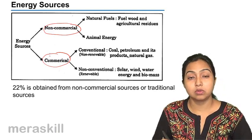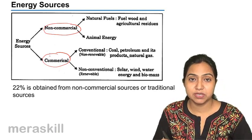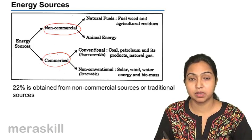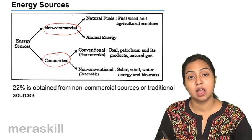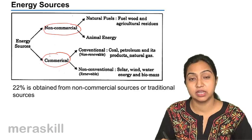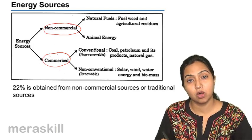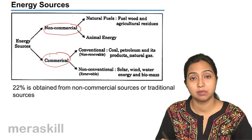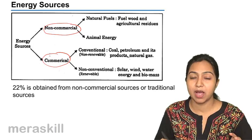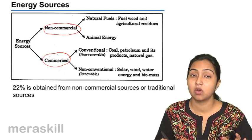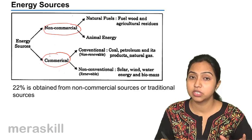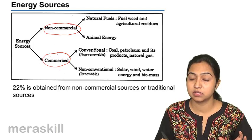Now, as we all know, 22% of our population lives below the poverty line. So it becomes very clear that they are not in a state to afford commercial sources of energy because they do not have the money to buy that energy. So they depend on non-commercial sources of energy, or the traditional sources of energy.